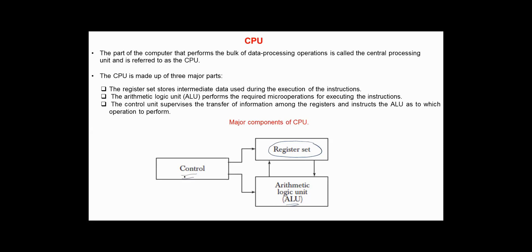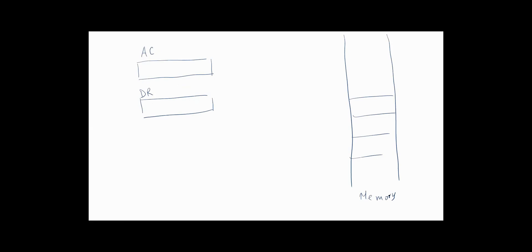And the Control Unit is used to supervise the transfer of information among the registers and instructs the ALU as to which operation to perform. In the basic computer used so far, we have only two registers: the accumulator and the data register. Memory locations were needed to store pointers, counters, retain addresses, and temporary results.